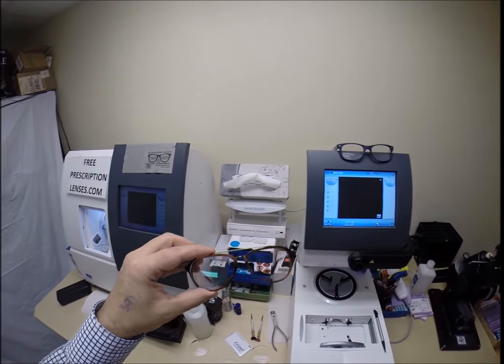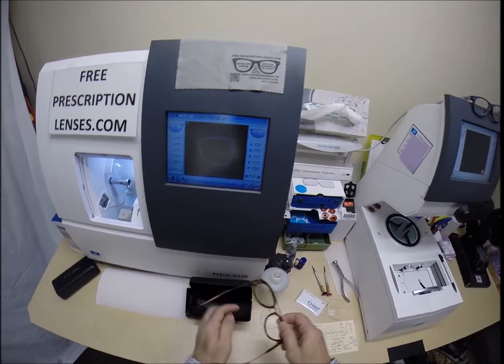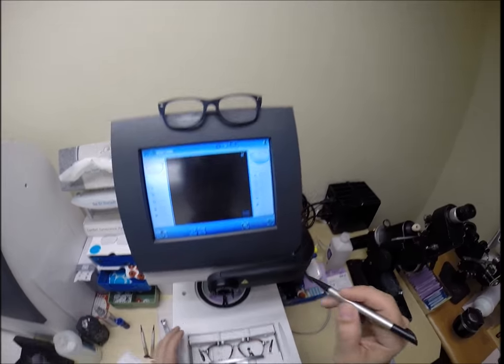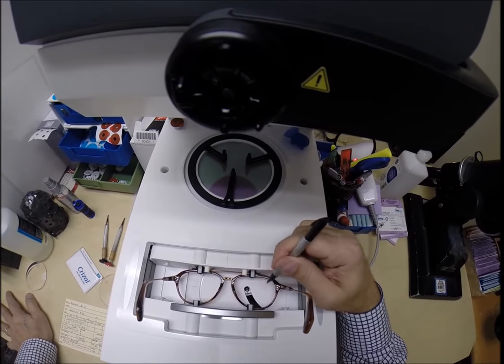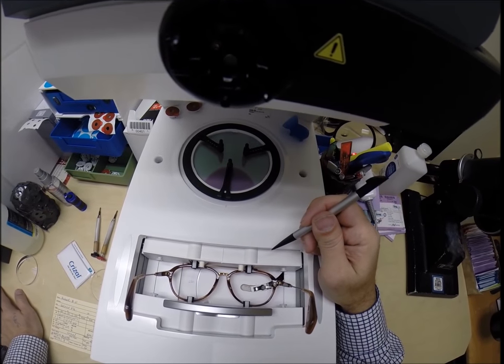I'm going to pop out the original demo lenses, one of which says William Morris on there. Put it into the tracing element of my blocker and hit start. A little stylus is going to pop up and trace the inside bevel of the right side of the frame before doing the same thing on the left.